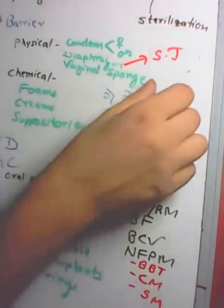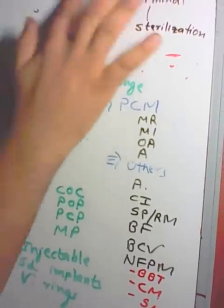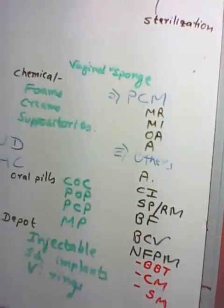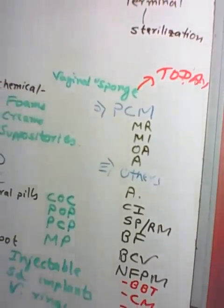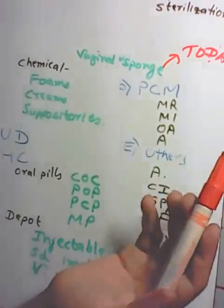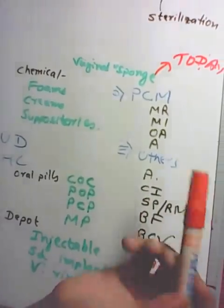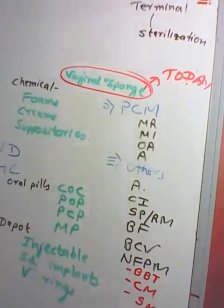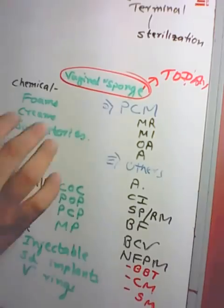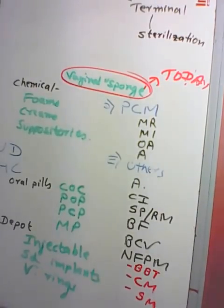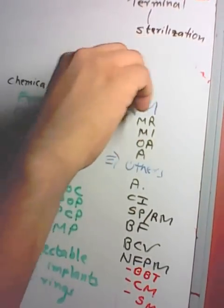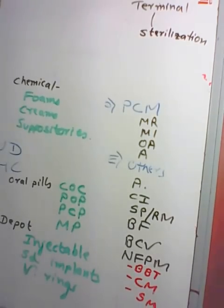Vaginal sponge, brand name 'Today', is made of polyurethane and contains nonoxynol-9. Regarding chemical methods — foams, creams, suppositories — these are not generally recommended by professional bodies and doctors tend to avoid them.